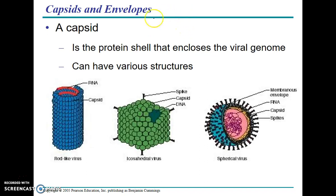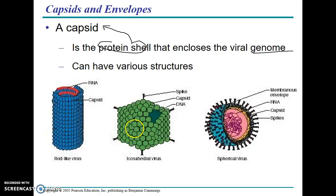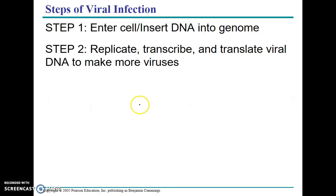Viruses also have a protein shell — sometimes called a capsid — that encloses their genetic material, or genome. The capsid can have various structures: here's a rod-like virus where its protein coat is rod-shaped, here's an icosahedral virus with an odd angular shape, and here's a spherical virus where the protein coat is circular. So the structure of viruses can vary by their genetic material and protein coat. The rest of this lesson will be about how viruses infect cells.